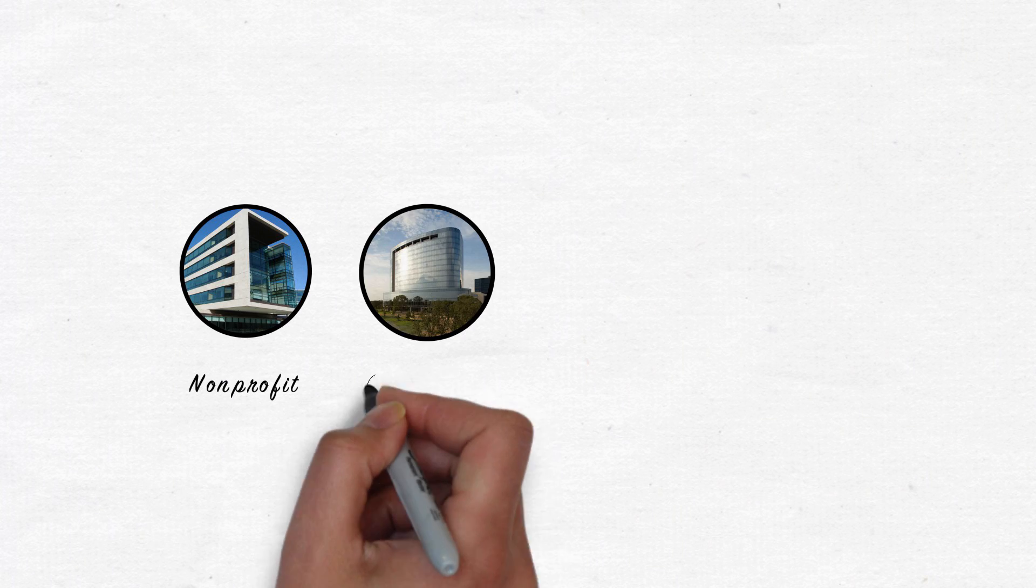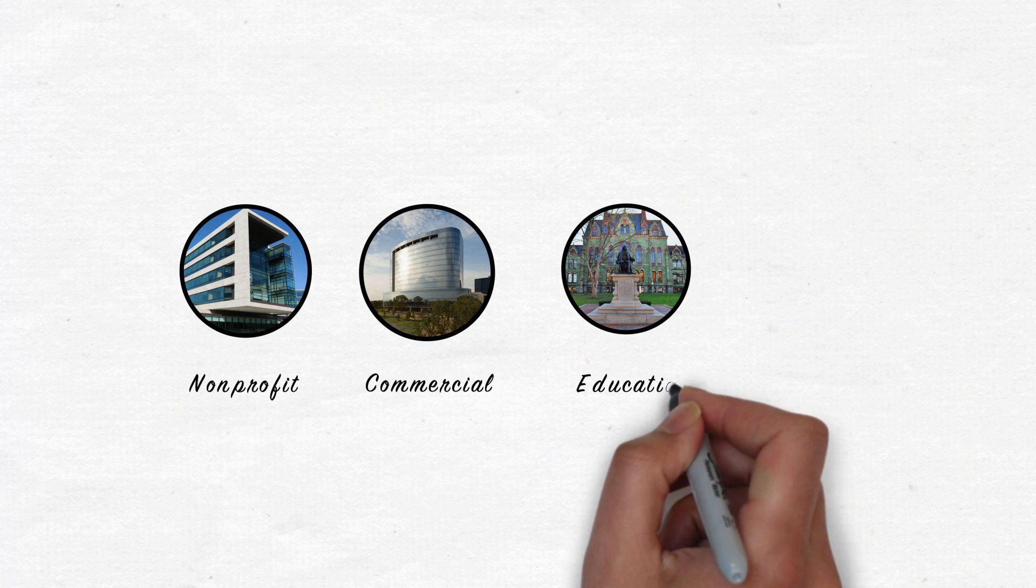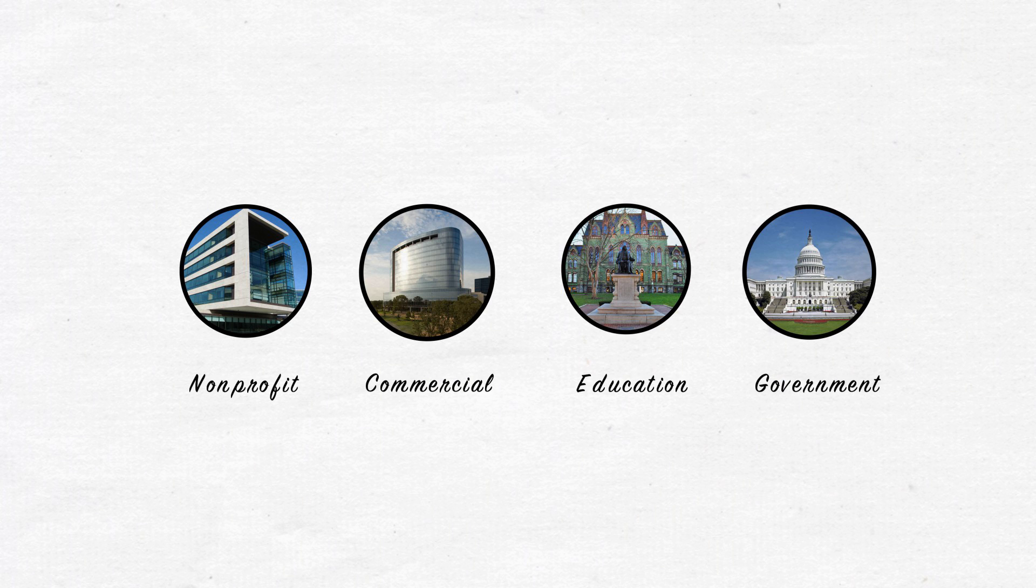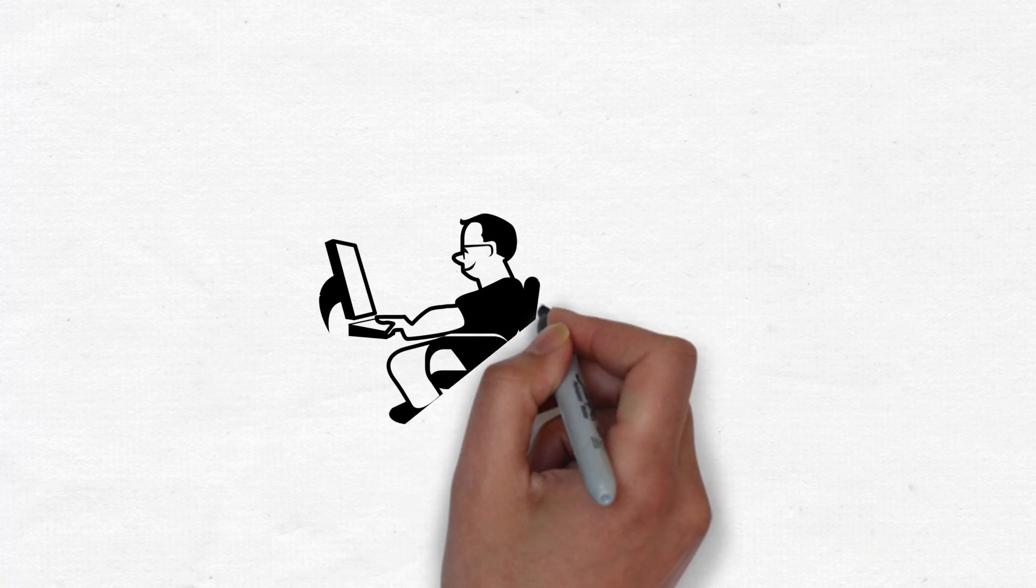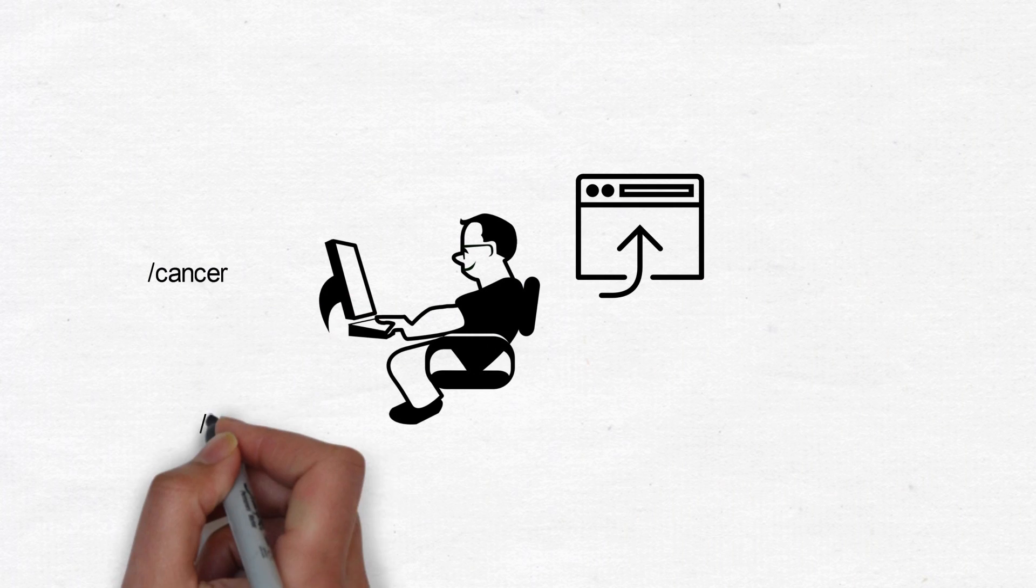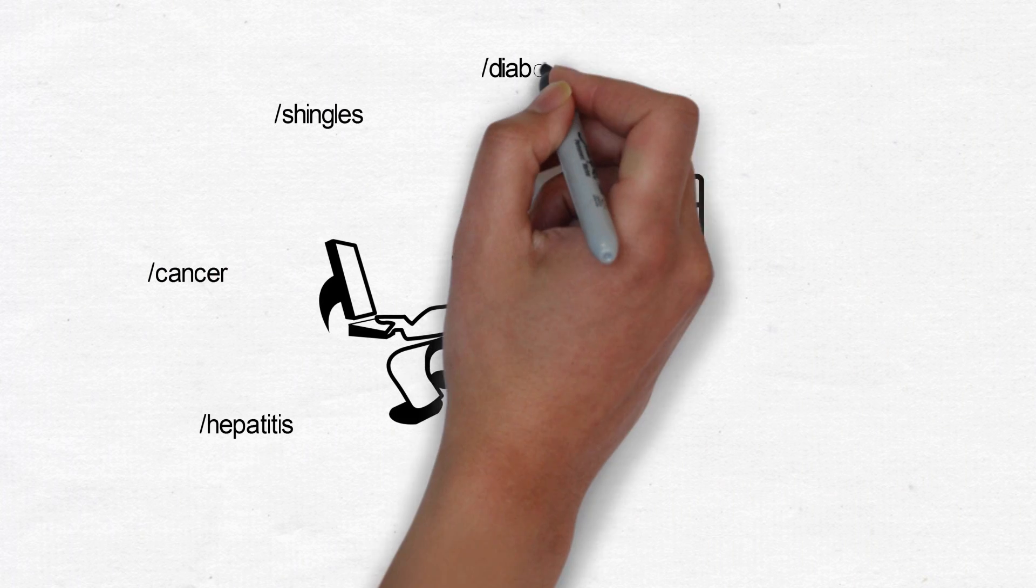This is true on non-profit, commercial, educational, as well as government run websites. When a user types in a URL into an address bar, often times the name of a disease, symptom or treatment is included.